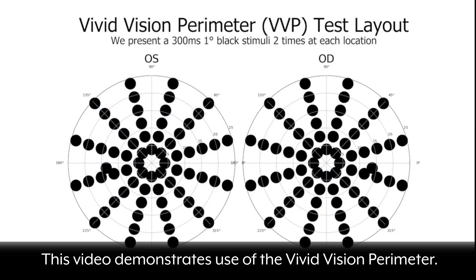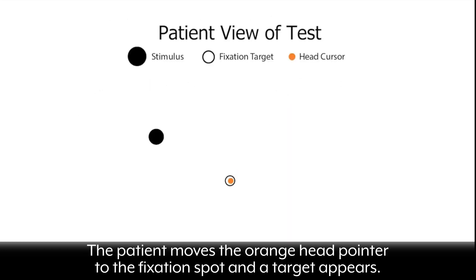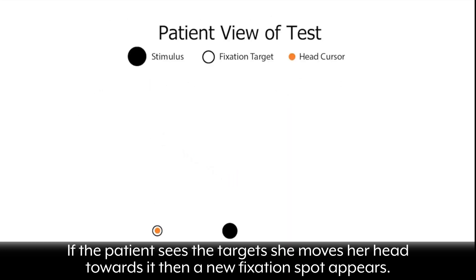This video demonstrates use of the Vivid Vision Perimeter. Each of 69 locations per eye will be tested twice using a 1 degree black spot shown for 300 milliseconds. The patient moves the orange head pointer to the fixation spot and a target appears. If the patient sees the target, she moves her head towards it, then a new fixation spot appears.